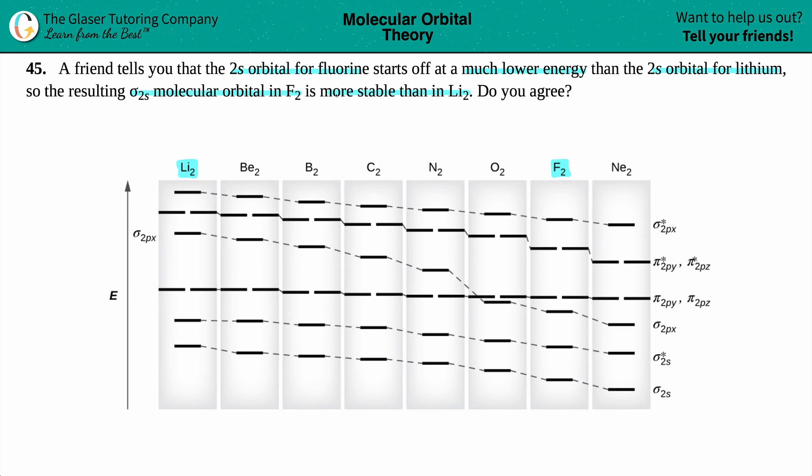So if an orbital is more stable, that means that it has less energy. The more energy that a molecule contains, the more reactive it is. So something that is more stable just means that it has less energy. So let's find that sigma 2s orbital.